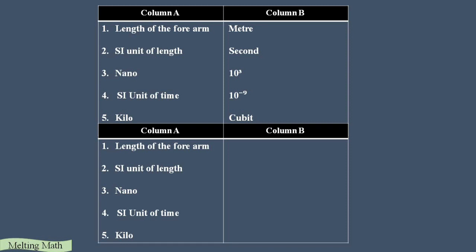Continuing the match: length of the forearm is represented in cubit. SI unit of length is meter. Nano — nano means 10 to the power minus 9, so we represent nano as 10 power minus 9. SI unit of time is second. Kilo means 10 power 3, which equals 1000, so one kilogram equals 1000 grams.